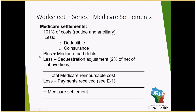The Medicare program will calculate the sequestration adjustment, which is 2% of the net of the lines above, to ultimately determine your total Medicare reimbursement costs. This will then be subtracted by any payments received, noted as CE-1, which comes from your PSNR reports, as well as any lump sum adjustments that have been received or paid by the organization to Medicare during the cost reporting period, to ultimately arrive at your Medicare settlement on the cost report.